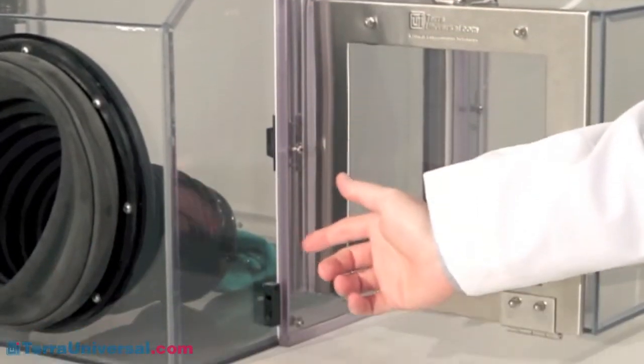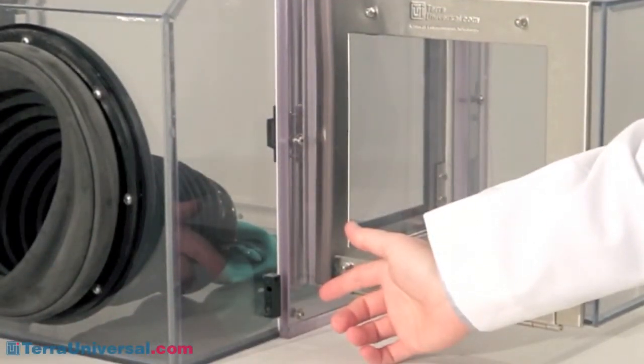Terra's automatic RV valve, mounted down below, allows safe pressure release during nitrogen purging.